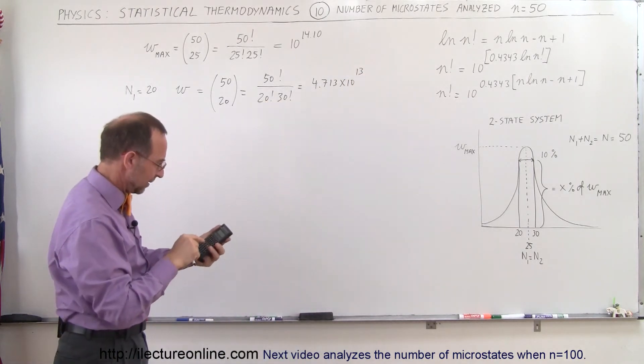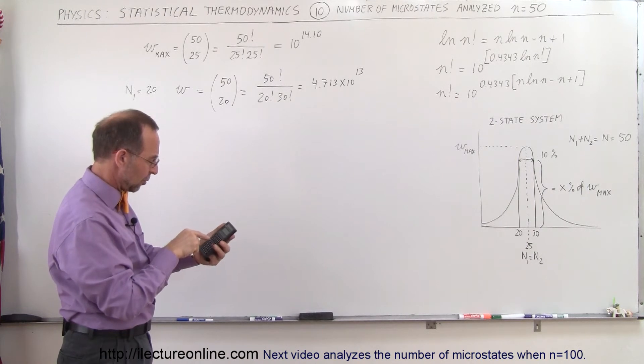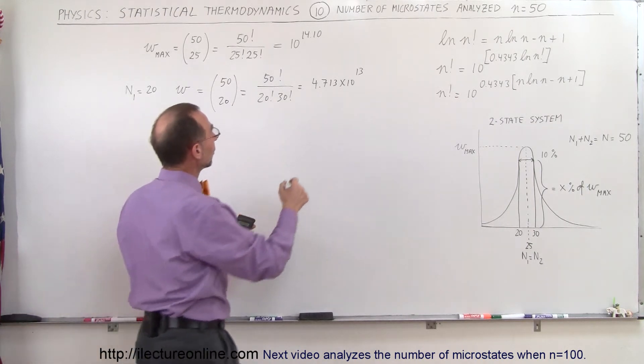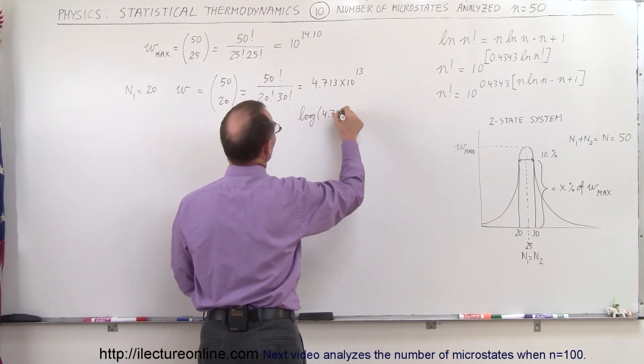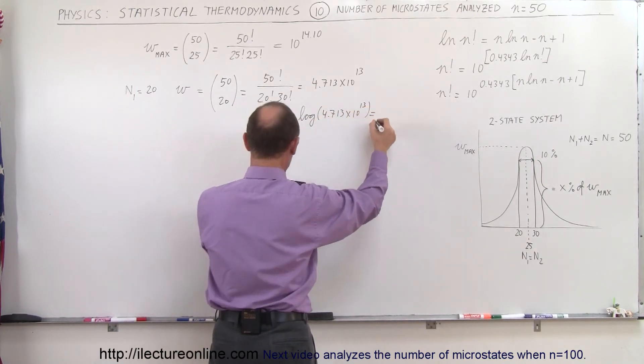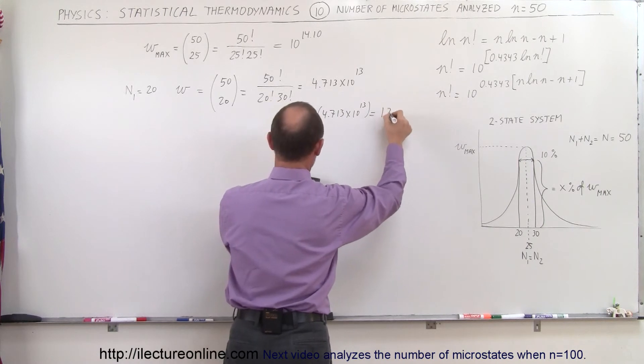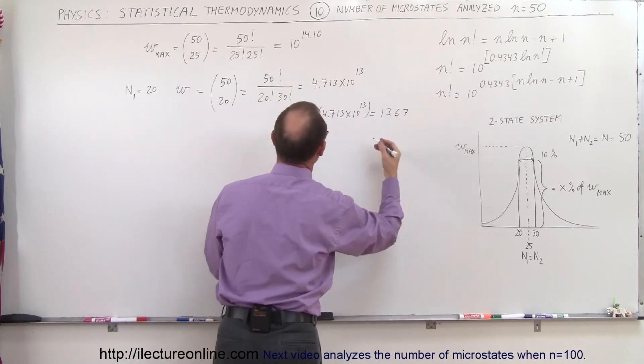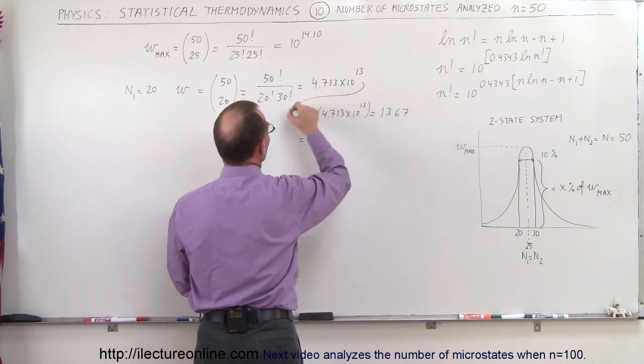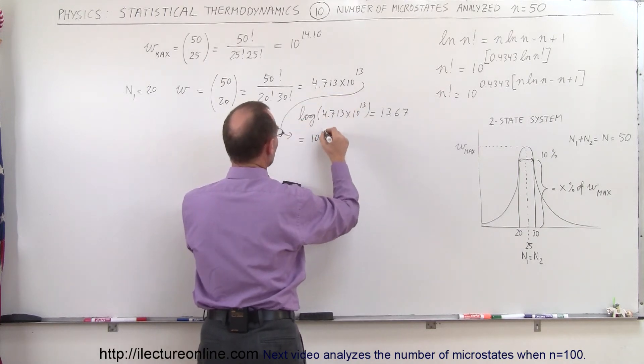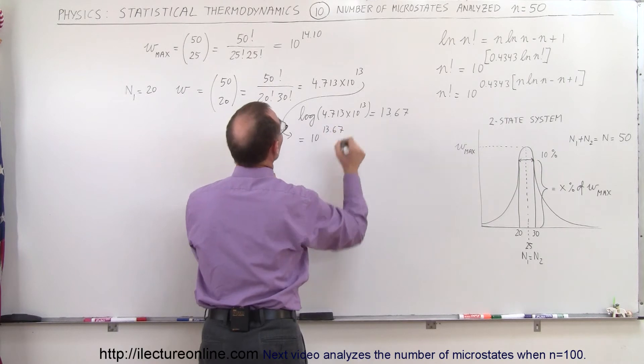If I take the log of that, so there's my log button right there. So the log of that number, the log of 4.713 times 10 to the 13th power is equal to 13.67. And so that means that we can write this as 10 raised to the 13.67 power.